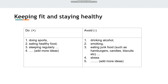Here is a list of some ideas. The things we do to keep fit are doing sports, eating healthy food, sleeping regularly, etc. We should avoid drinking alcohol, smoking, and eating junk food such as hamburgers, candies, and biscuits. Stress is also something we should avoid. You can add more ideas if you have them. Keeping fit and staying healthy is very important.